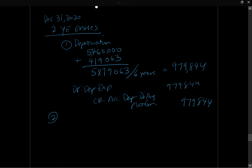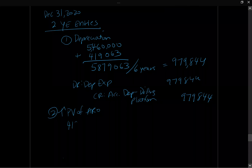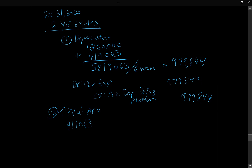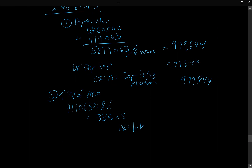The next year-end entry is to increase the present value of the ARO. As time goes by, our ARO needs to grow toward the $950,000 future value, so we need to account for the time value of money. We calculate the amount by taking the ARO on our books — currently $419,063 — and multiplying by the discount rate of 8%, giving us an increase of $33,525. Under IFRS, the entry is: debit Interest Expense and credit ARO for $33,525. The point of this entry is to increase the ARO, getting it closer and closer to the future value.